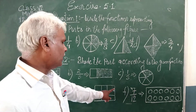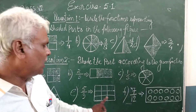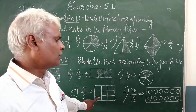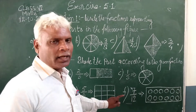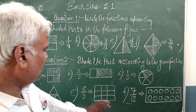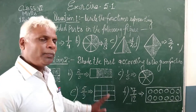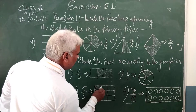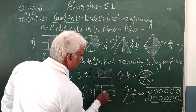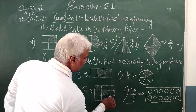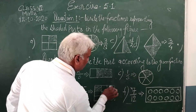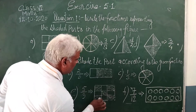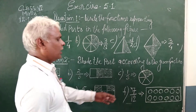Now see here. The denominator means this figure is divided into 9 parts: 1, 2, 3, 4, 5, 6, 7, 8, 9. Out of the 9, 5 parts are to be shaded. Shade the 5 parts: 1, 2, 3, 4, and then 5.